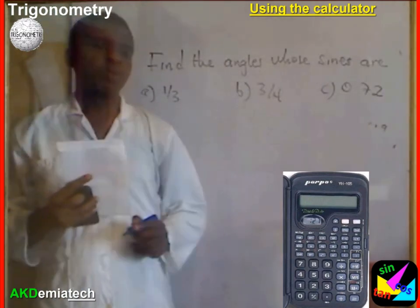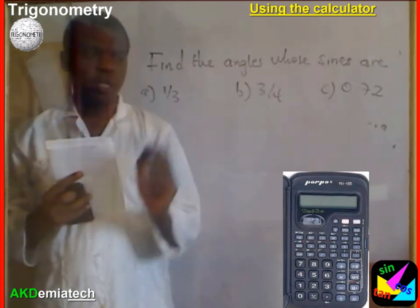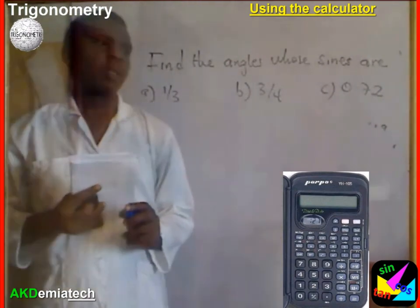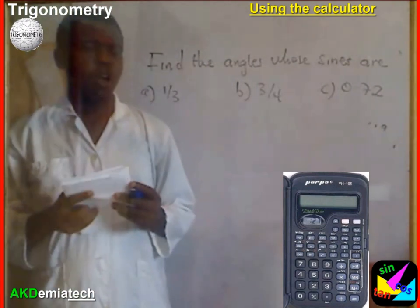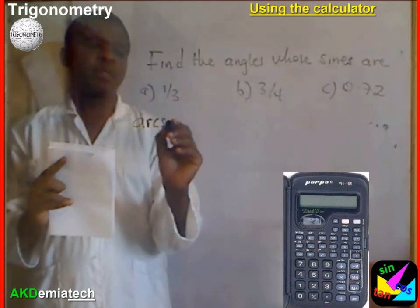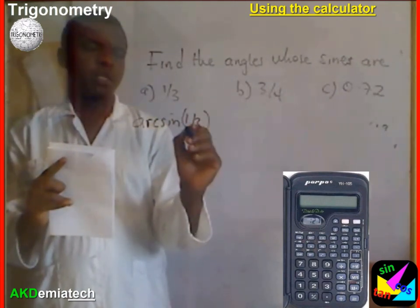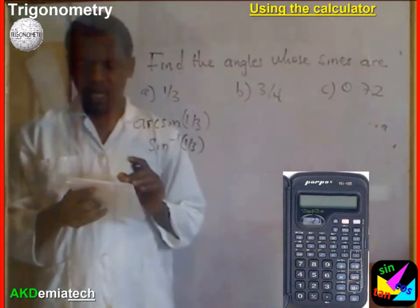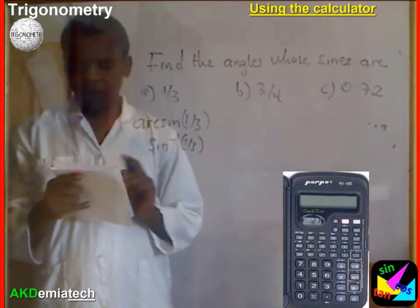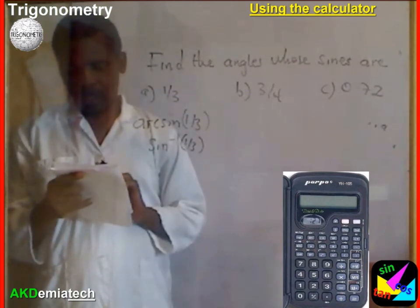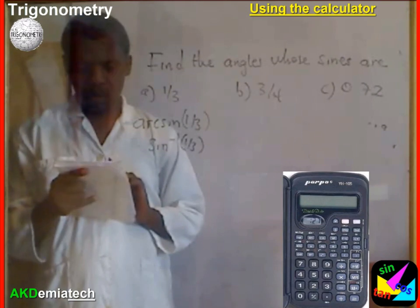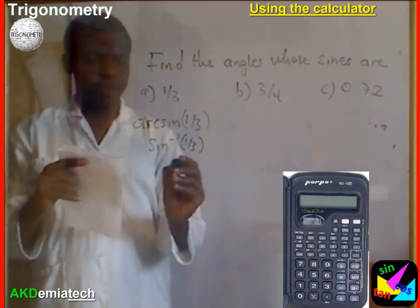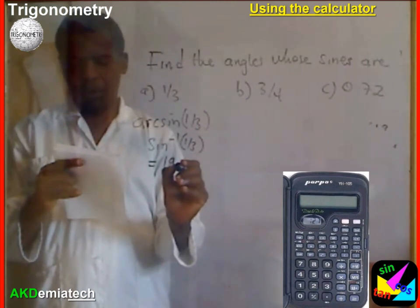Find the angles whose sines are: a) one-third, b) three-quarters, c) 0.72. To get this from my calculator I'll have to take the arcsin. So arcsin of one-third, which is actually sine inverse of one-third. I punch it on my calculator — I'll enter the second function, then take sine inverse. This gives me 19.47 degrees.